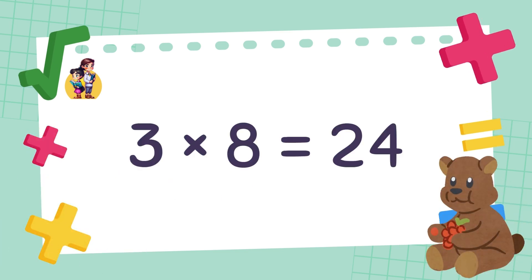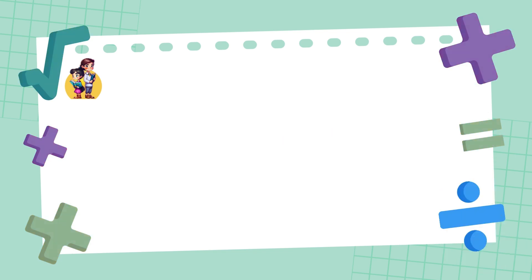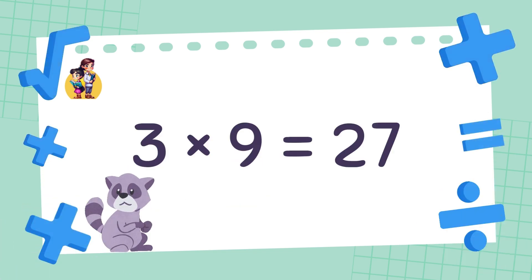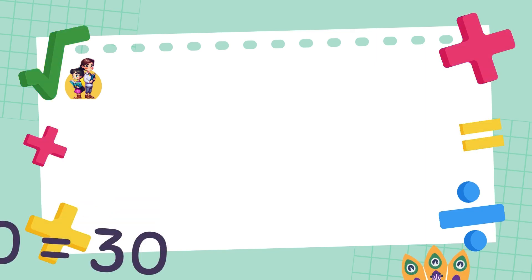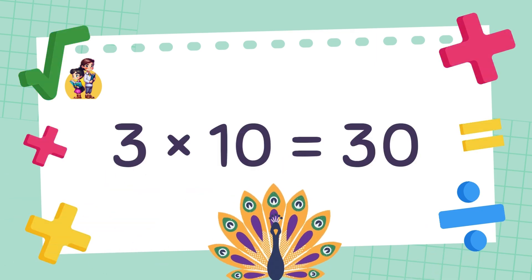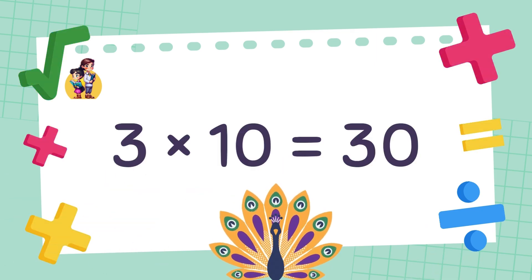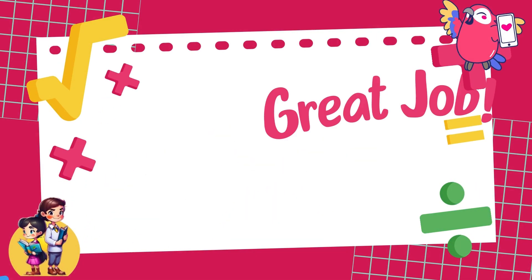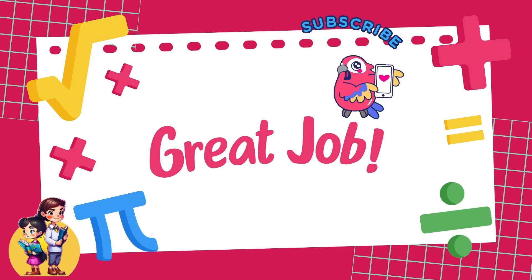3 times 8 is equal to 24. 3 times 9 is equal to 27. 3 times 10 is equal to 30. Great job!